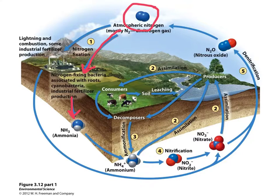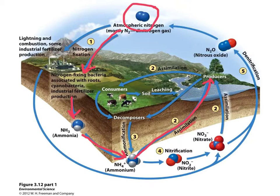Nitrogen-fixing bacteria also have the ability to convert nitrogen gas into ammonia. Ammonia is easily converted into its ionic form, ammonium, in the soil. Ammonium, much like nitrate, can be taken up by producers. And again, when living things take up nitrogen, we call the process assimilation.